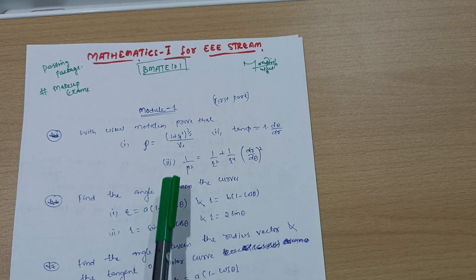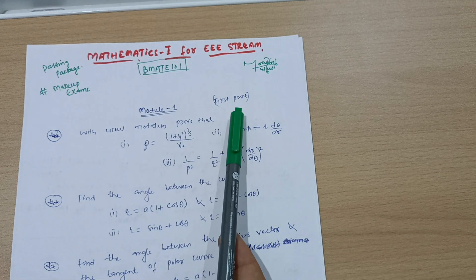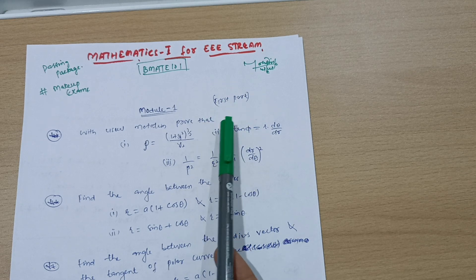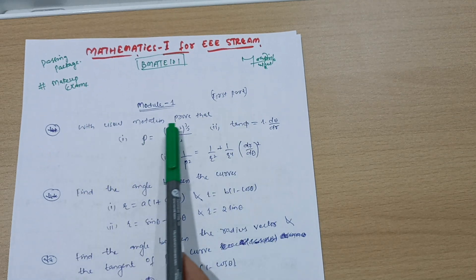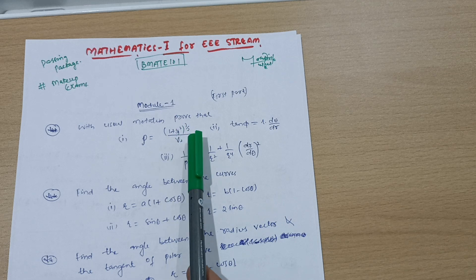First of all, you should take Module 1, only first part. Your focus should be on first part only, you can leave second part. With usual notation, prove that rho equals 1 plus y1 squared divided by y2 raised to power 3/2.